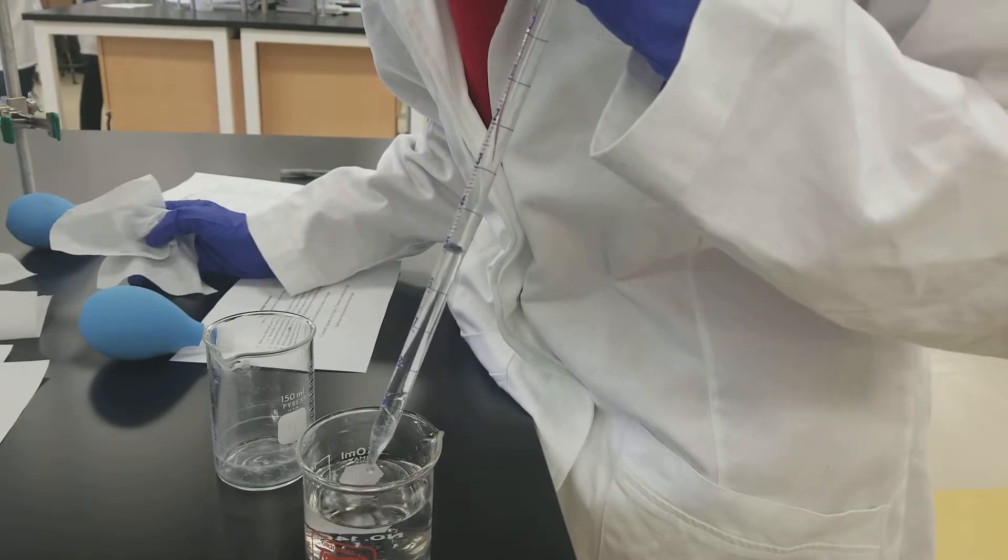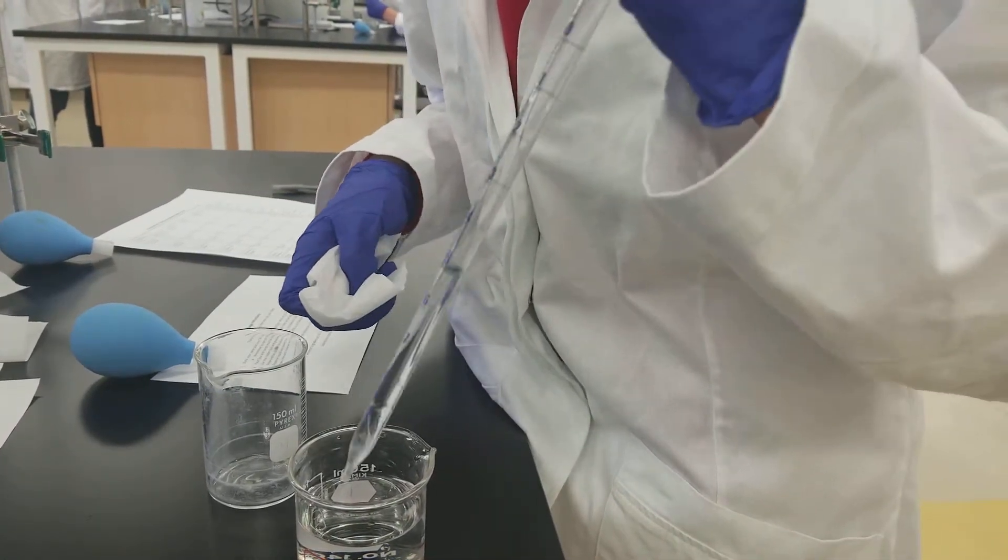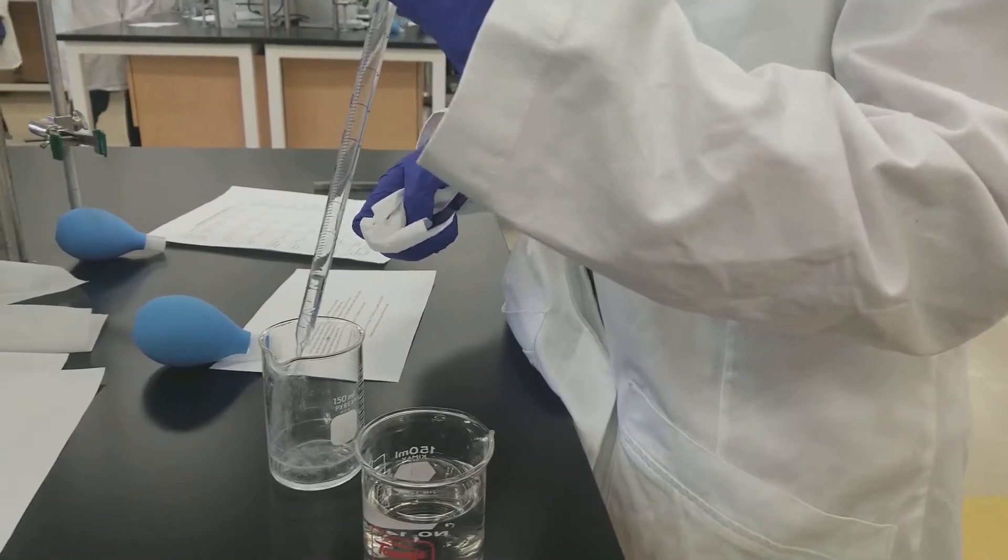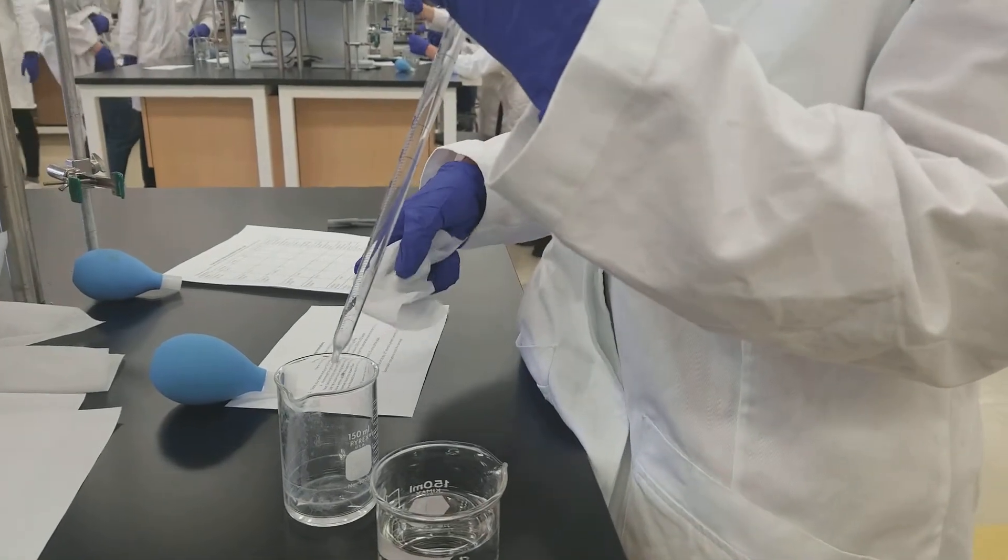Okay, the meniscus is right at the bottom of the 5. Close enough. And so I'm going to wipe it with a Kim wipe. And I'm going to tap it on the edge again. And I'll just put it in here. Okay, I think that's it.